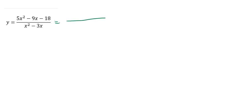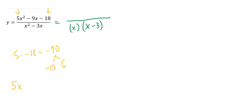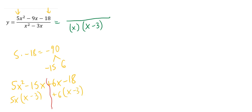Here I do some factoring. I'll do the denominator first — there's only a GCF. For the numerator, I have a 5 and a negative 18. Multiplying 5 and negative 18 gives negative 90. I need factors that multiply to negative 90 and add to 9 — negative 15 and 6 work. So I rewrite as 5x squared minus 15x plus 6x minus 18 and do factor by grouping. I get 5x as my GCF on the left and positive 6 on the right. That factors to 5x plus 6 times x minus 3.